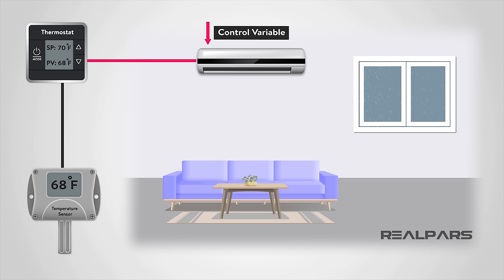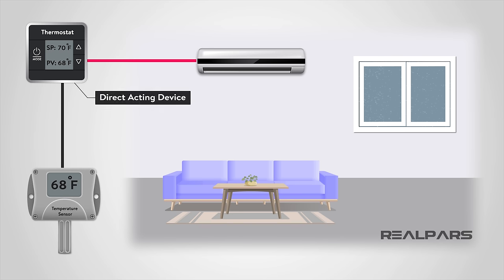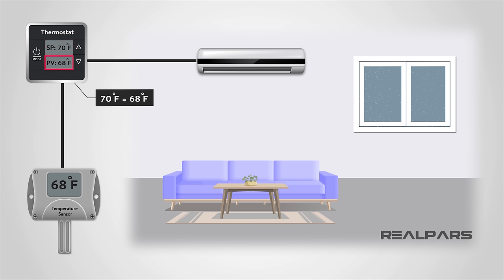The heating or cooling unit is the control variable, or CV. The control variable may also be referred to as the manipulated variable, or MV. There are different types of control action, and for the temperature control in the house, the controller action is a direct acting device, meaning that the calculations are set point minus process variable. In our house example, we have a set point of 70 and the process variable is 68. When we subtract the process variable from the set point, we see that we have a value of 2. The result is called the error, or E, in our process.